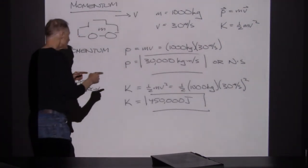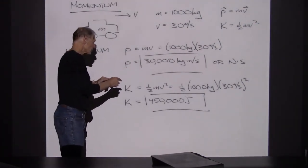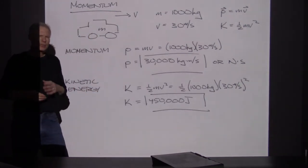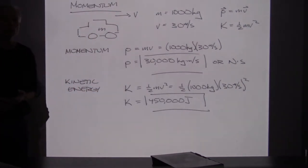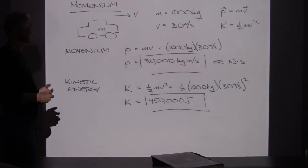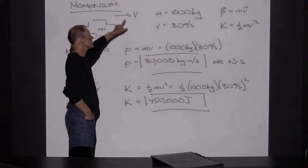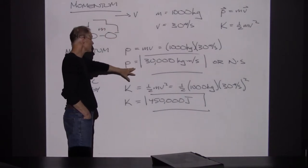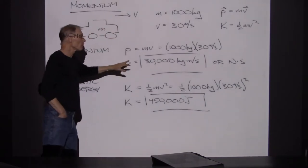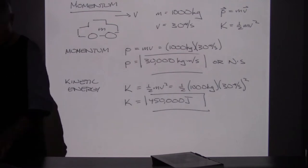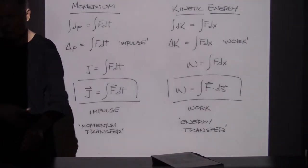The kinetic energy is a scalar, so kinetic energy is not in any particular direction — it's just an amount of energy that the object has. Whereas if this thing's headed in the x direction, then this is the x momentum. So momentum does depend on directional information.